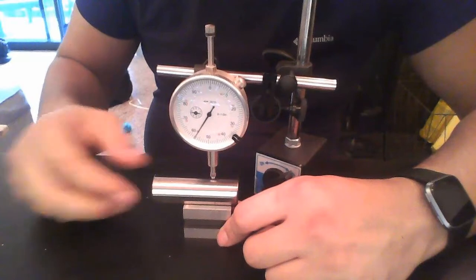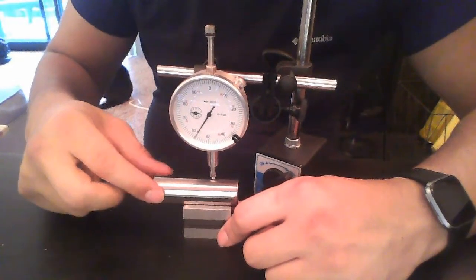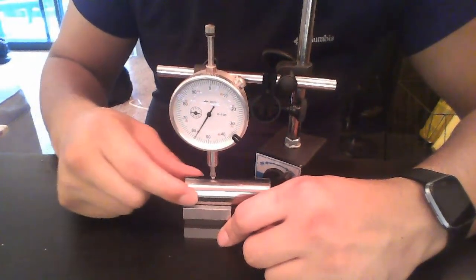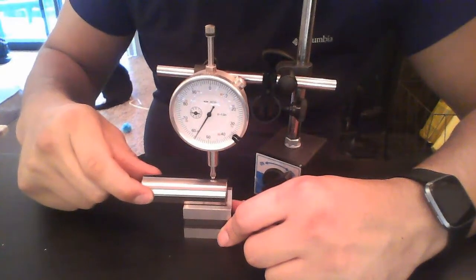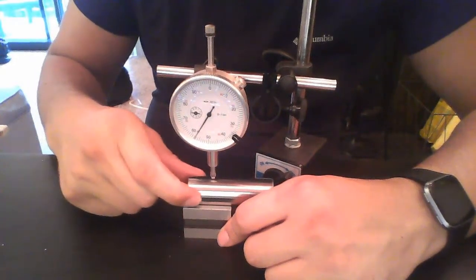If I want to measure at another cross section, I'll rotate it once to a different location, then run it along the length. Again, while I run it along the length, I am not rotating the cylinder.